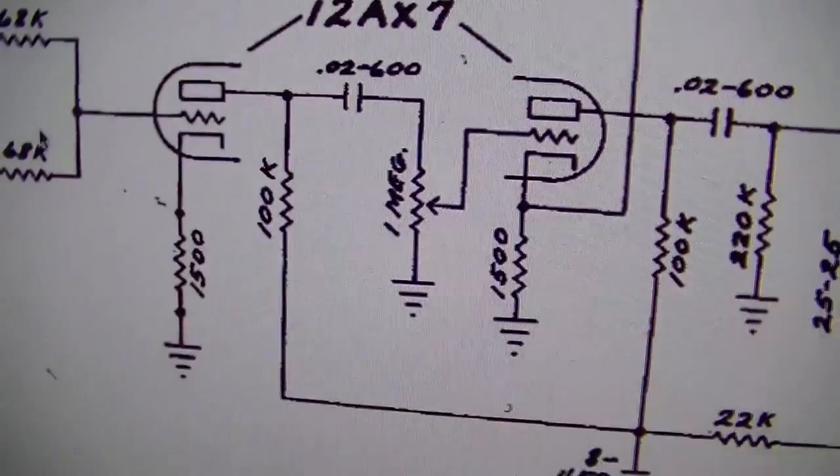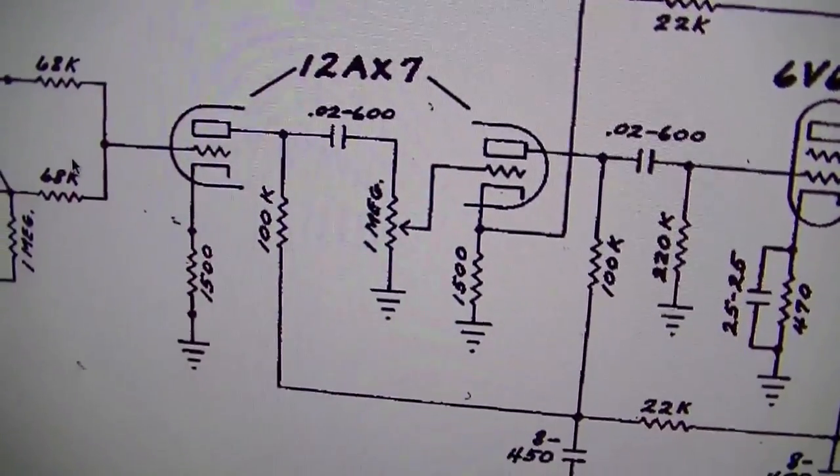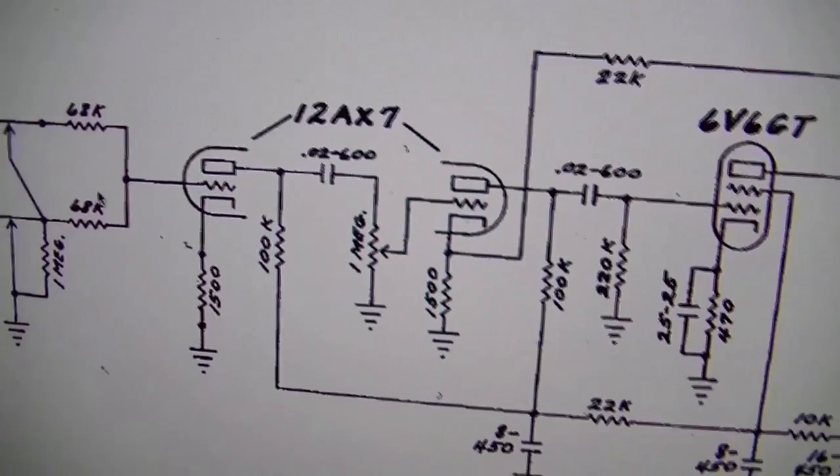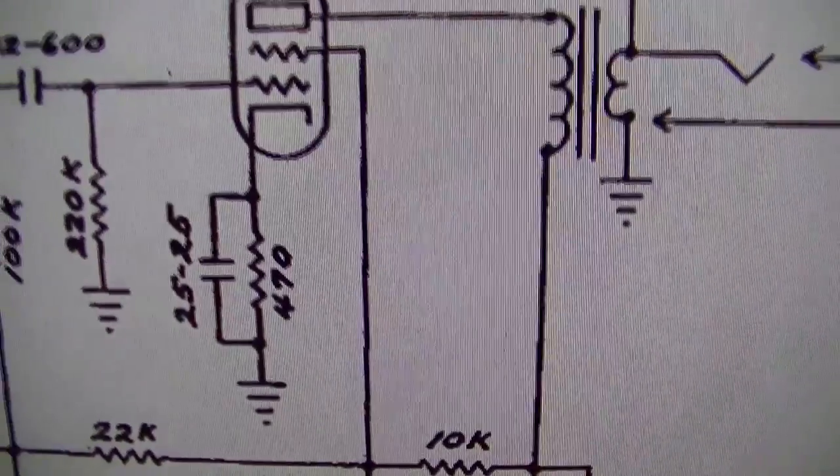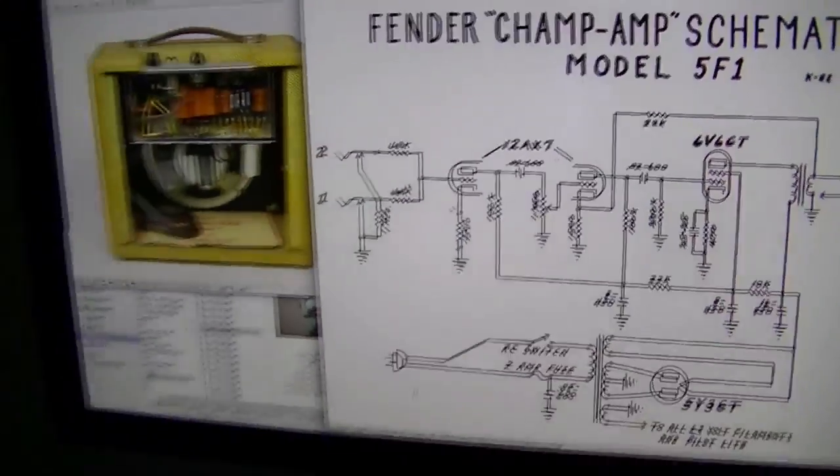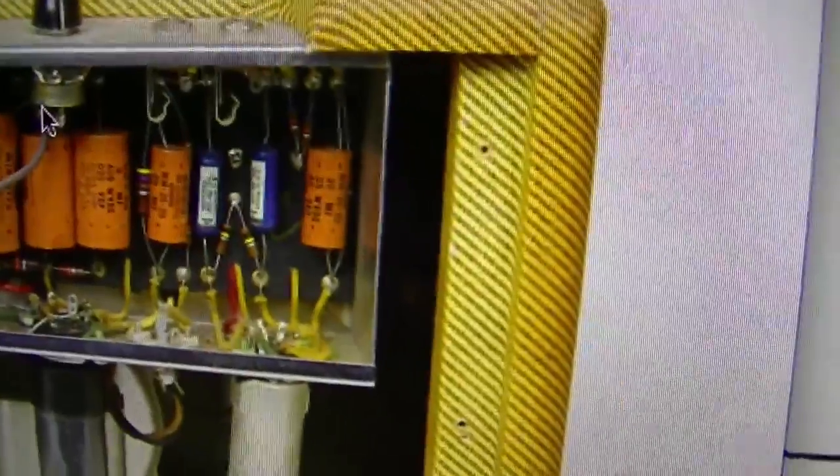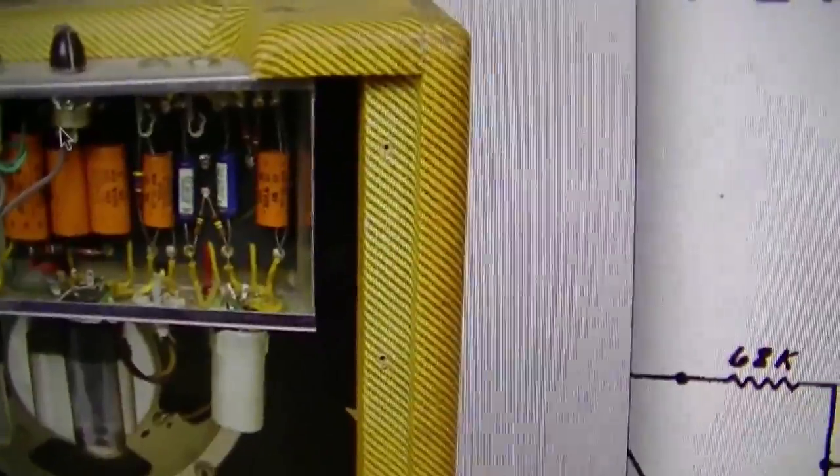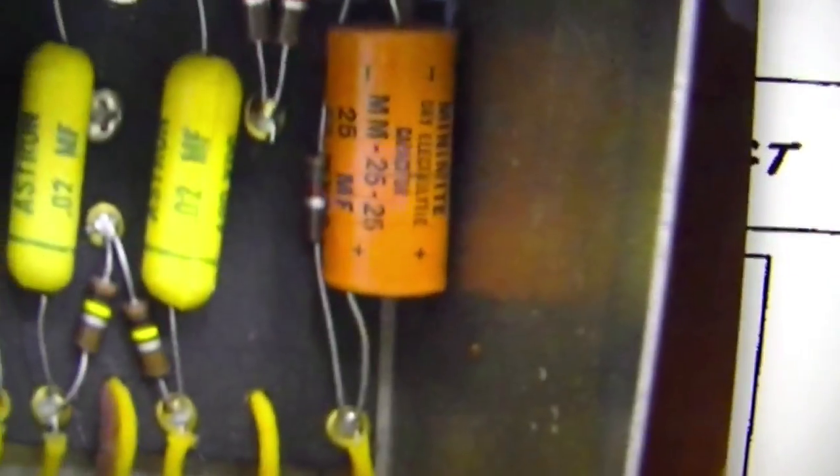Now, one thing you'll notice, on the cathode of the first stage, there's a 1500 ohm resistor. There's been a bit of discussion on the internet regarding putting a bypass capacitor, 25 mic, just like in the output, which gives it some more gain. They say, did it originally come with it or not? Well, let's have a look over here. As you can see, that big orange capacitor on the right-hand side. That's the cathode bypass cap. So, some of these Tweed Champs have them. This one certainly did.